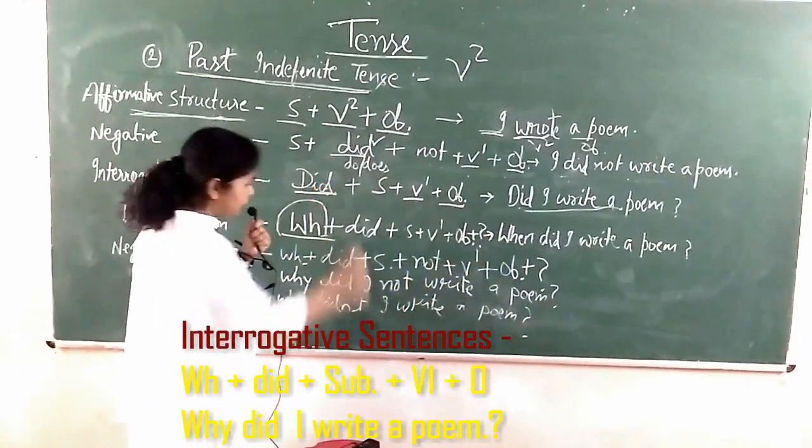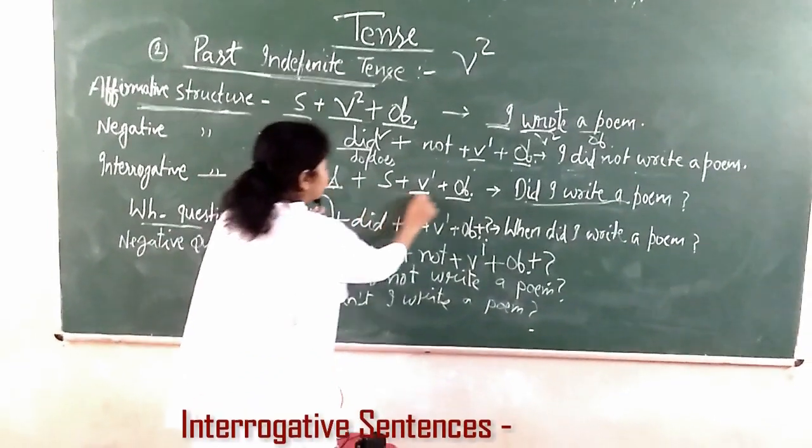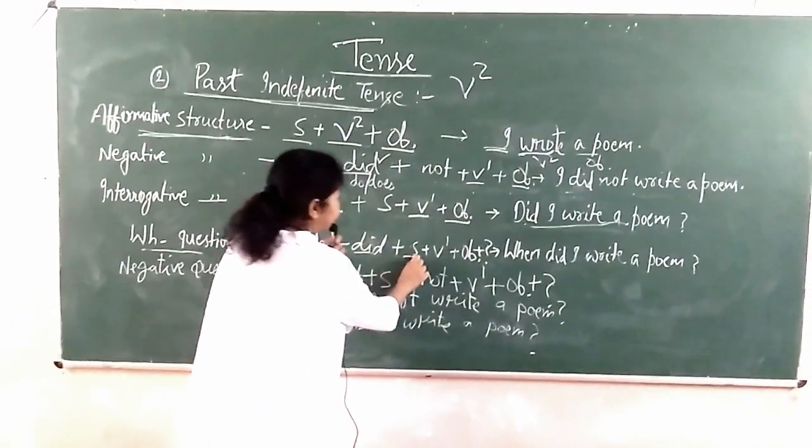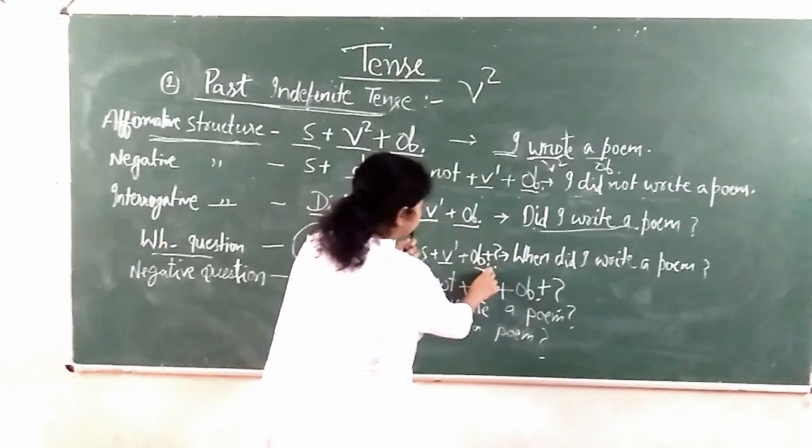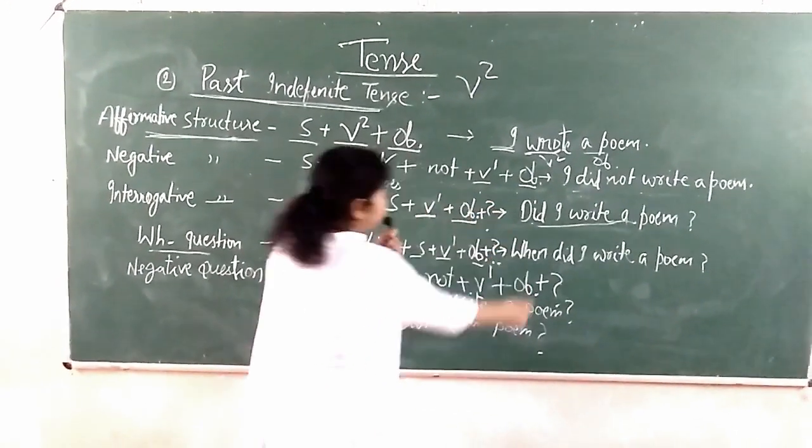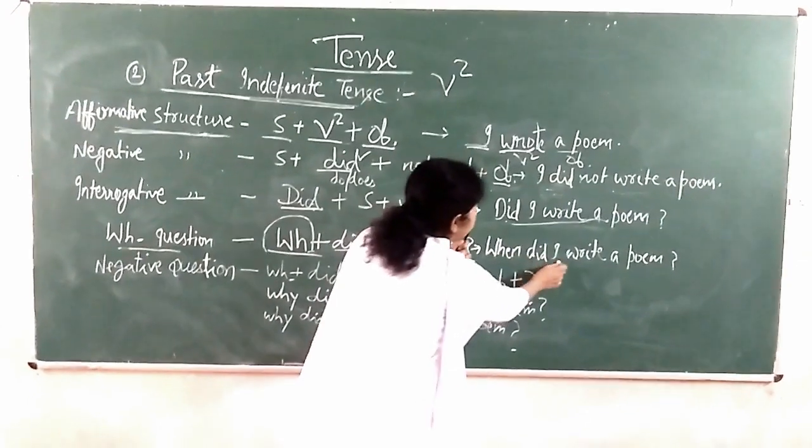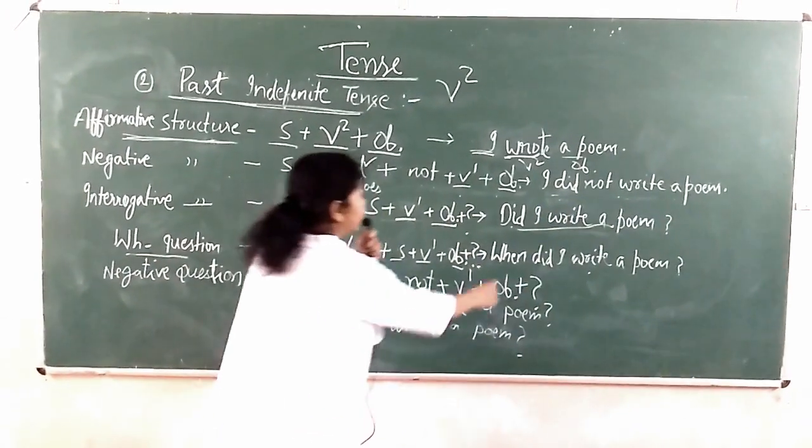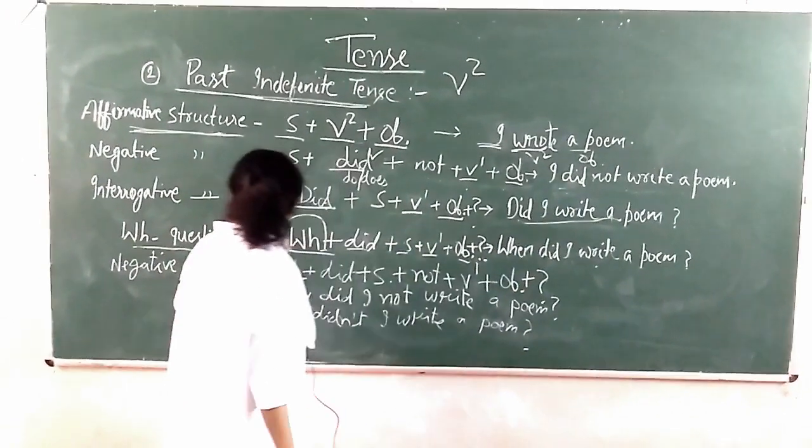Subsequently, WH + did + subject + V1 + object. For example, when did I write the poem? Why didn't I write the poem?